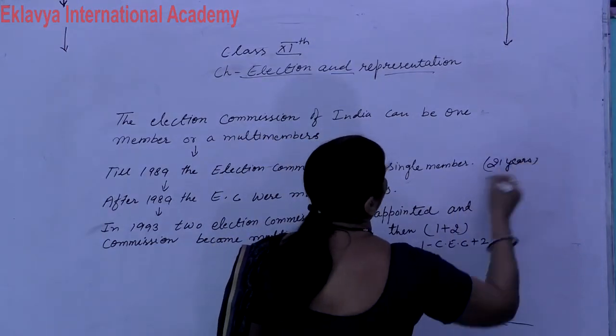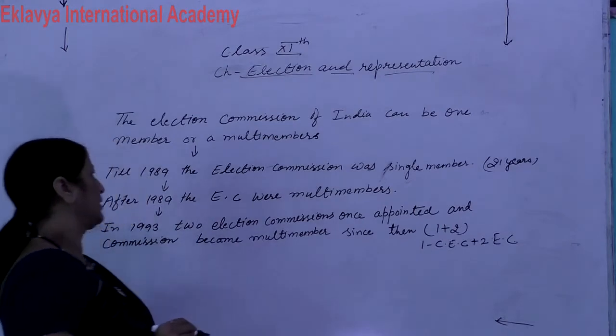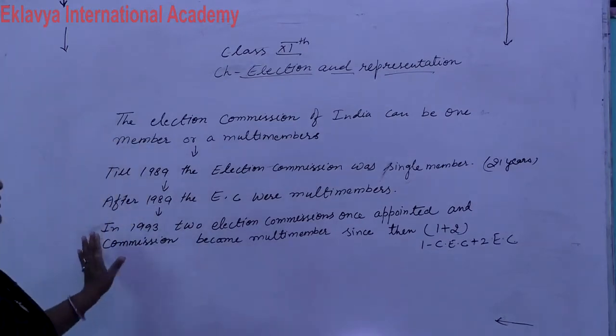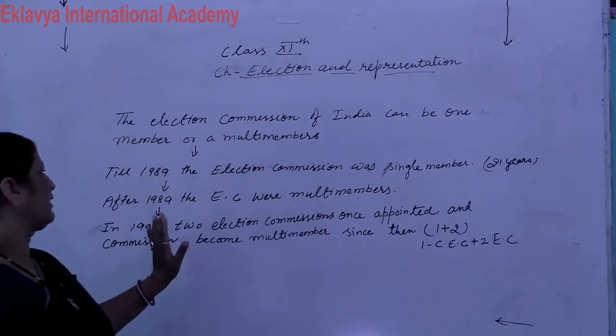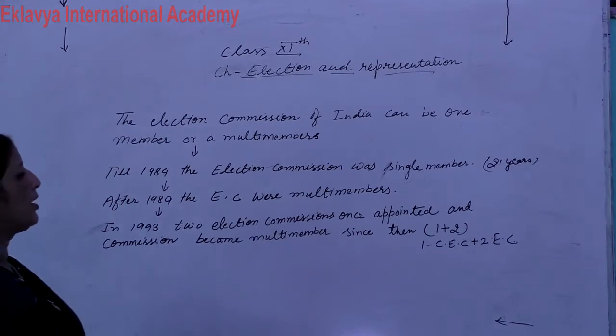The voting age for universal adult franchise was changed after 1989, and the EC became multi-member after that.